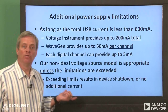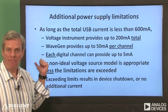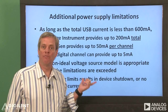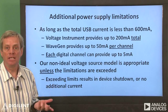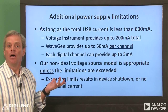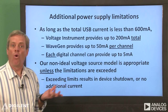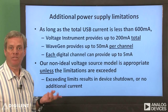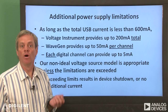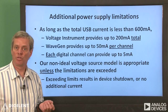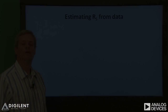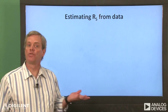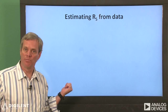The non-ideal voltage source model we derived is appropriate as long as none of the above current limitations are exceeded. If we exceed those limitations, the power supply shuts down or results in no additional power being provided to the circuit. For the following analysis, let's assume that none of the Analog Discovery's current limitations are in effect, so that the non-ideal voltage source model is appropriate.